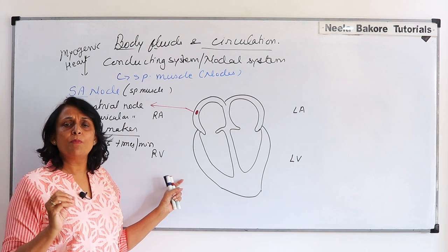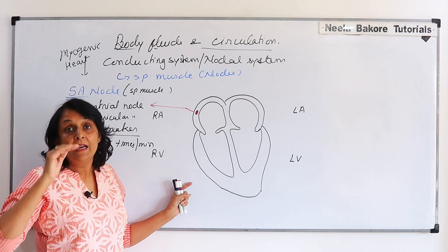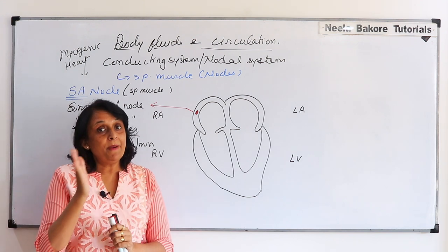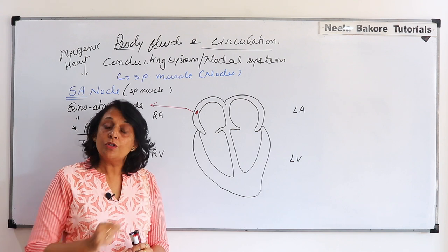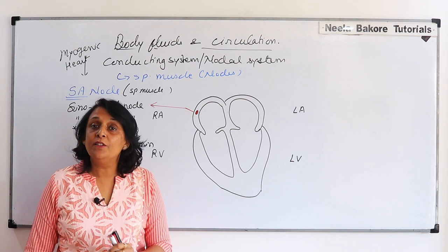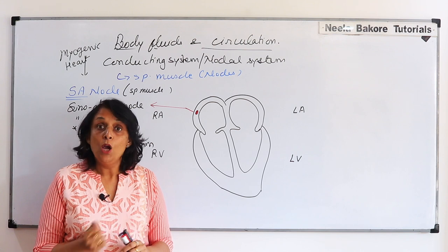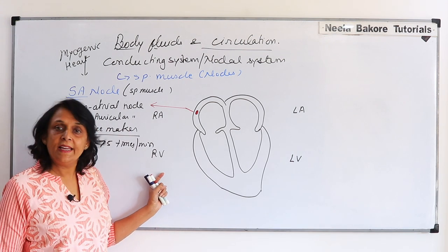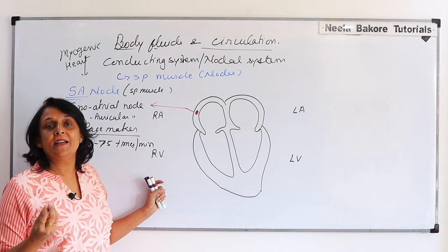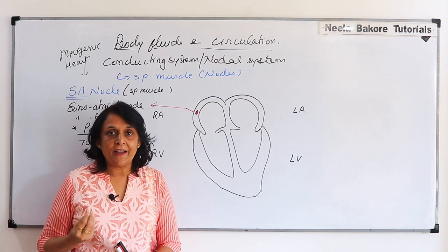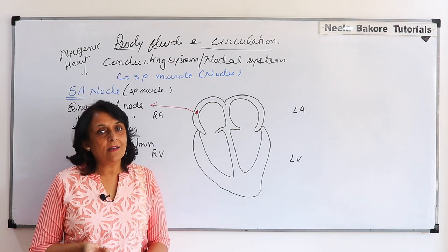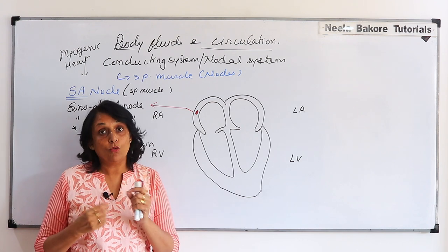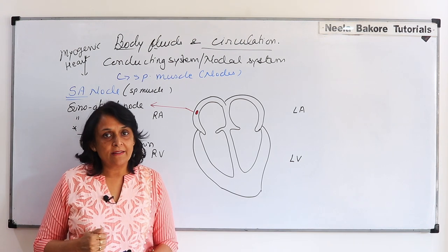Sometimes this pacemaker does not generate a stimulus at proper intervals, so the heartbeat is not normal. We call this arrhythmia — the rhythm of the heartbeat is not proper. In that case, doctors fit an artificial pacemaker, which is an artificial device that works like the SA node and generates stimuli at regular intervals so that normal heartbeat is maintained.